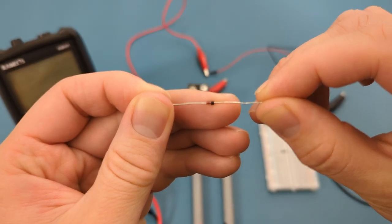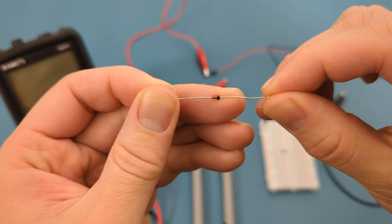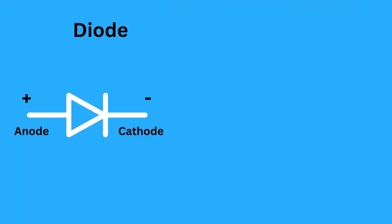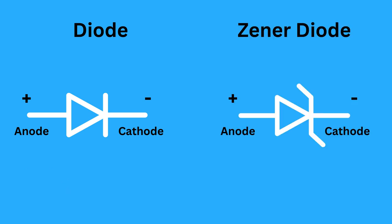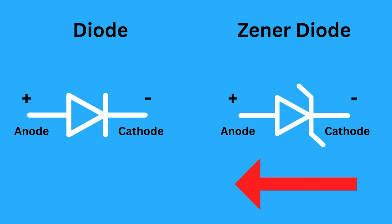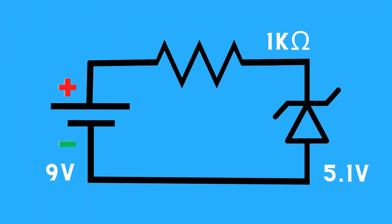Hey guys, today we're diving into the electrifying world of diodes, specifically the zener diode. A diode is an electronic component that primarily allows current to flow in one direction, from its anode to its cathode, while blocking current in the opposite direction. A zener diode is a type of diode that allows current to flow in the forward direction like a standard diode, but also in the reverse direction when the voltage exceeds a certain threshold known as the zener breakdown voltage.